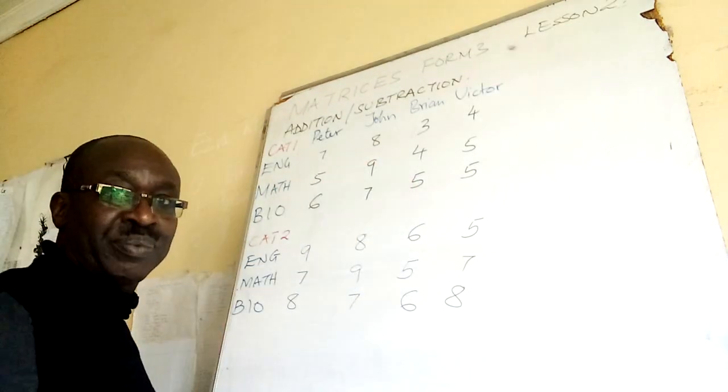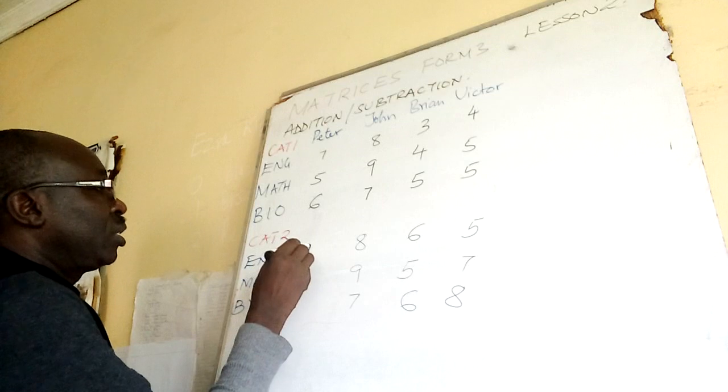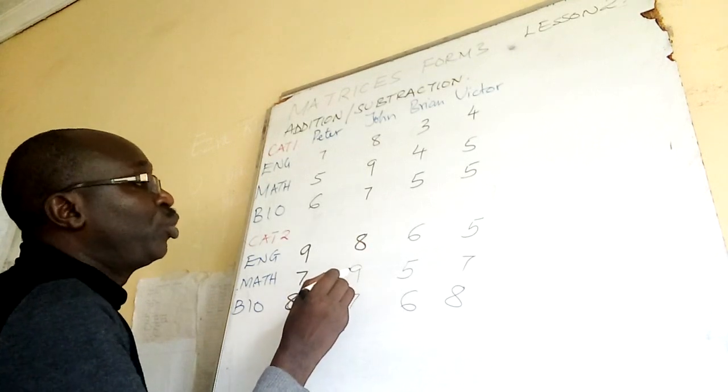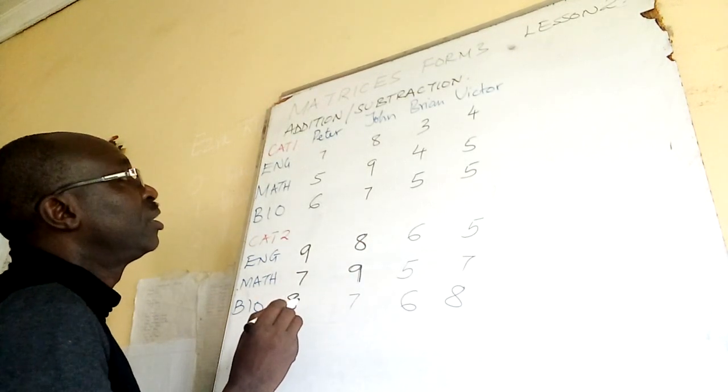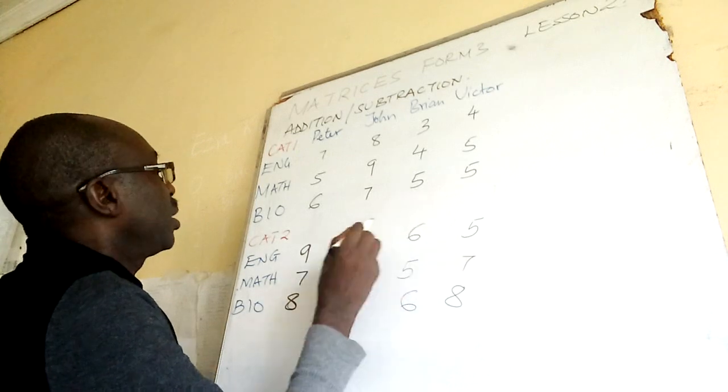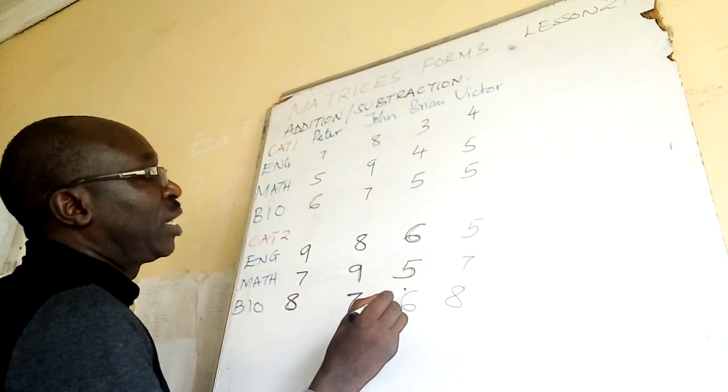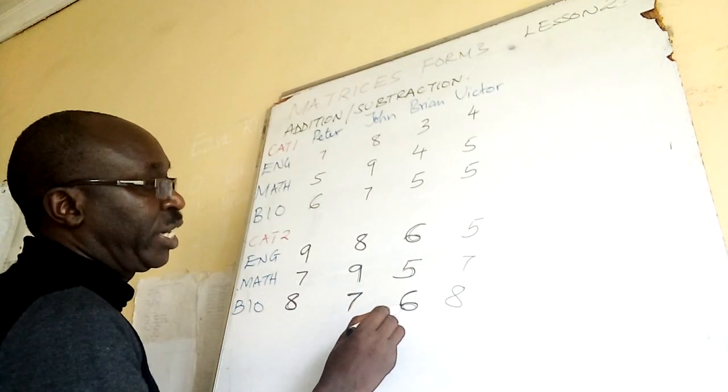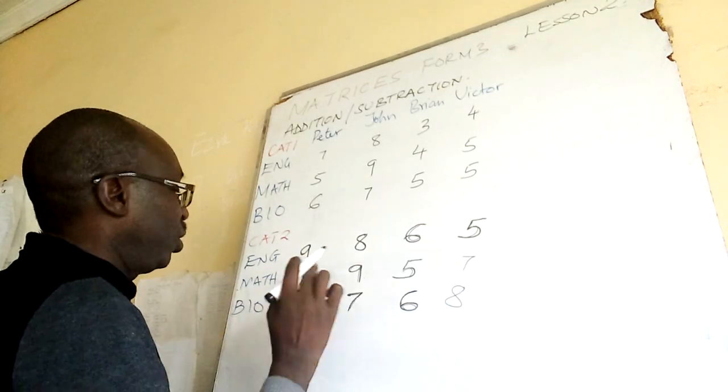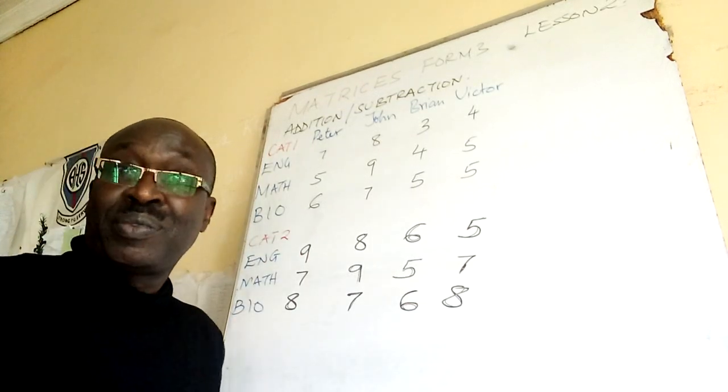That was cut one. And then this is cut two. This is nine, seven, eight. This is eight for John, nine in maths, and this is seven. Brian, in English, he got six. And then in mathematics, he got five. And then in bio, he got six again. And then here we have Victor. Victor got five in English, seven in maths, eight in bio. Are they clear?